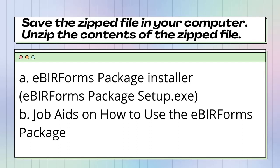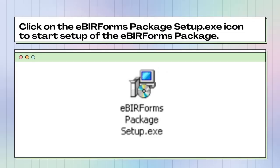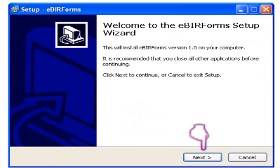After you save the zip file, extract the contents. This will contain the following files: the eBIR Forms package installer and job aids on how to use the eBIR Forms package. Click the eBIR Forms package setup.exe icon to start the setup of the eBIR Forms package, then click Next.